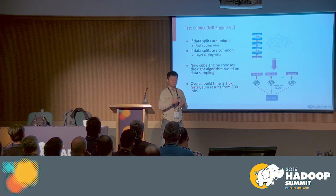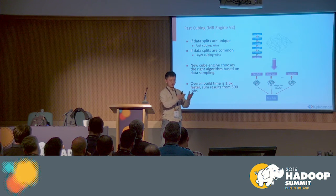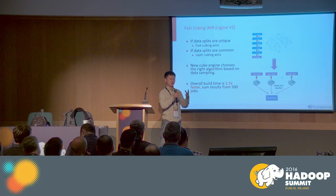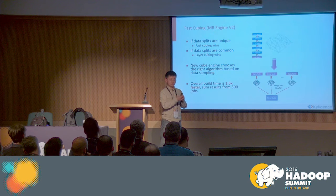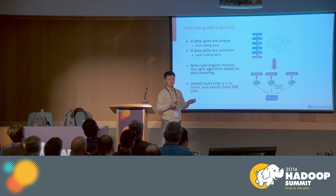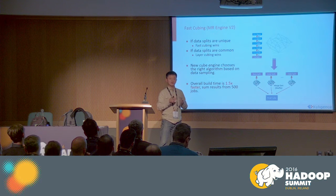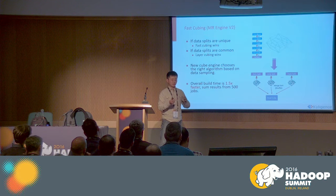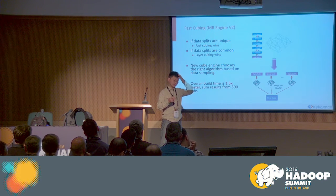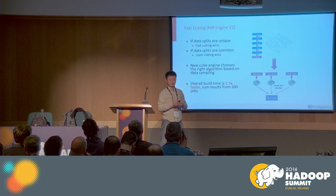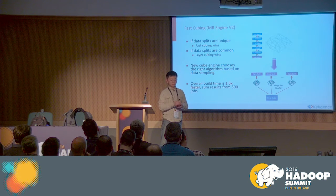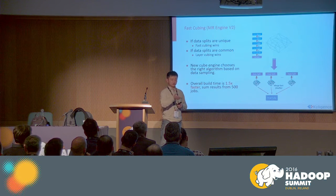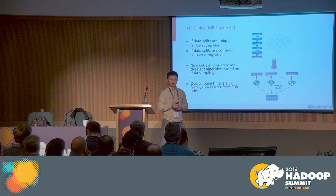That's the final result. We ran experiments comparing the new engine — which is a composition of both algorithms — to the old engine, which has only the layered algorithm. We ran about 5,500 different jobs and compared results from the two engines. The average overall speedup of the new engine is about 1.5 times faster.